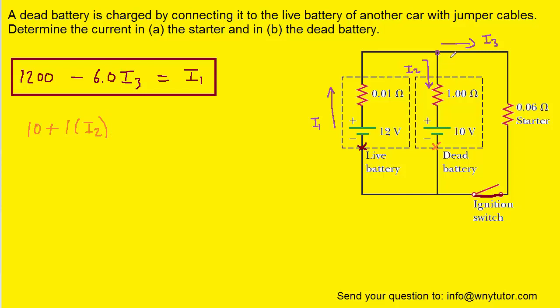We would then continue. Remember, we're going in this direction of the right-most loop. And we would be going with the current marked I3. And we're passing through this resistor. Since we're going with the current, that would be a negative potential change. Equal to 0.06 times I3. And then we continue our journey and return back to the orange X. So we can set that equal to zero.